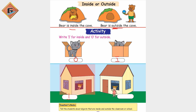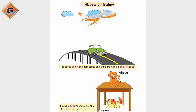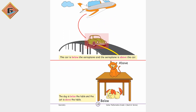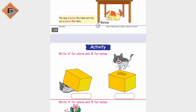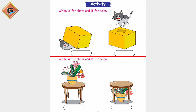Here this girl is inside, so inside. This girl is outside, so outside. Now above and below — this is above, below means underneath. This car is below and your aeroplane is above in the sky. The cat is above the table and the dog is below.